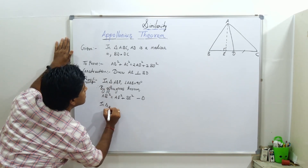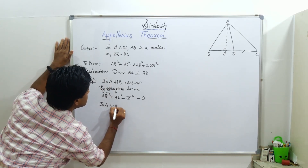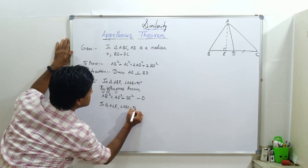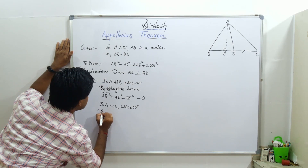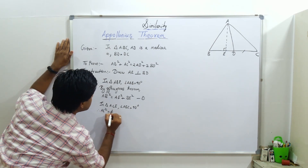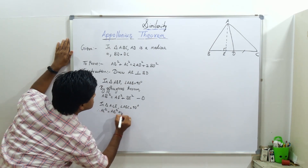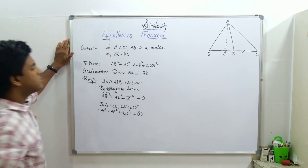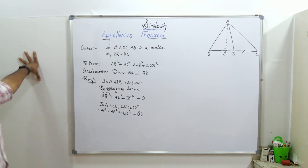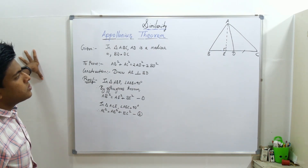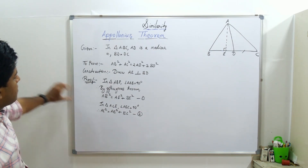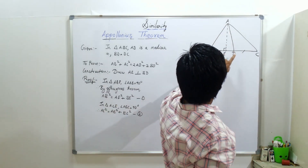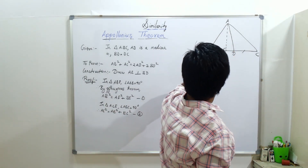Similarly, in triangle ACE, angle AEC equals 90 degrees. Therefore, by Pythagoras theorem, AC square equals AE square plus EC square. This is our second equation.